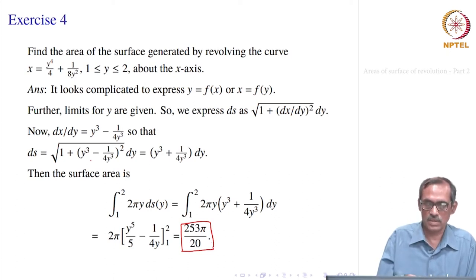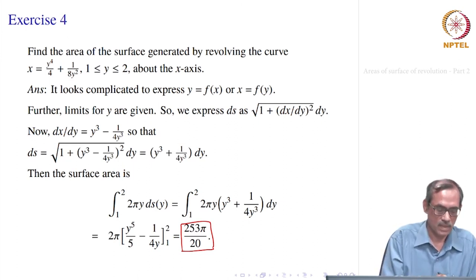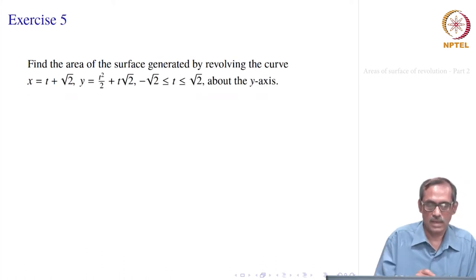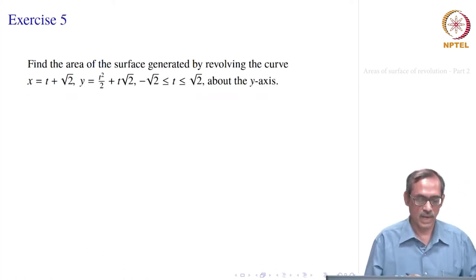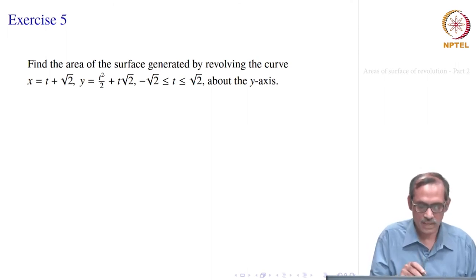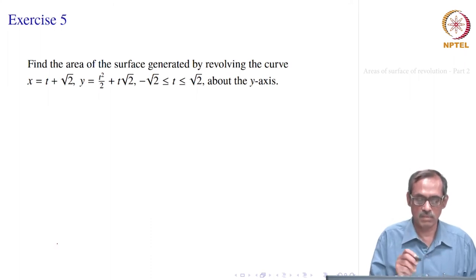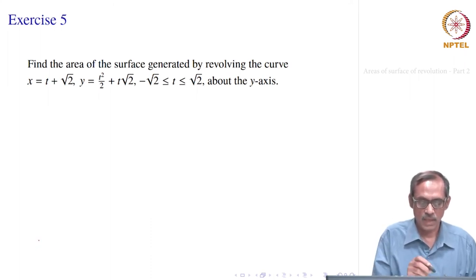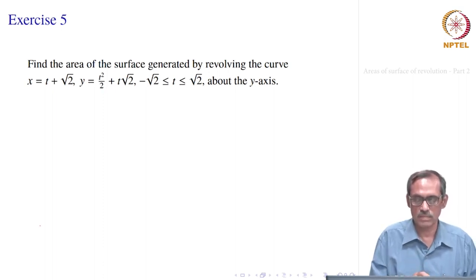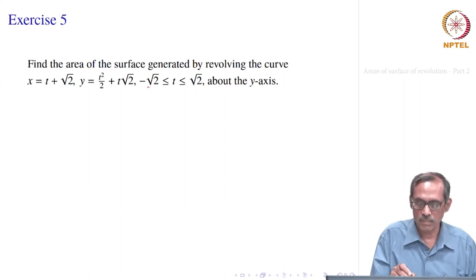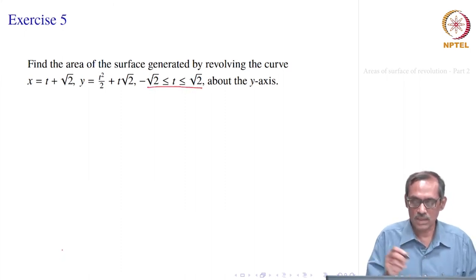Here is the trick: using the unified formula makes it easier. Going directly would be complicated. Now we go to Exercise 5: find the area of the surface generated by revolving the parametric curve x = t + √2, y = t²/2 + t√2, where t varies from -√2 to √2, about the y-axis.